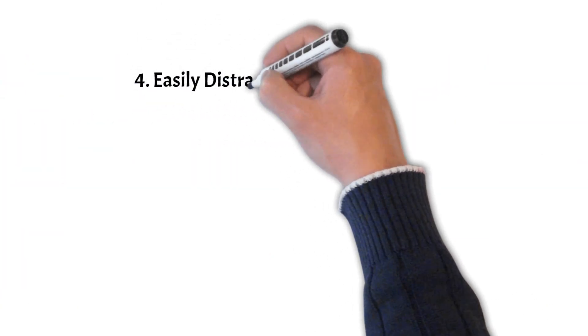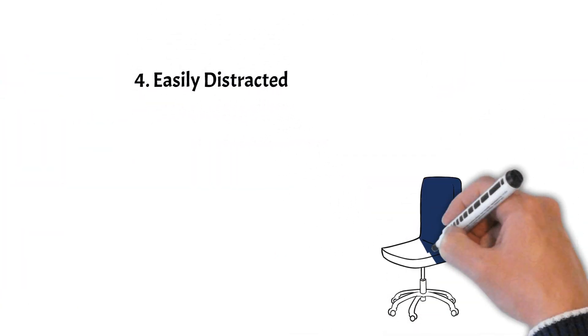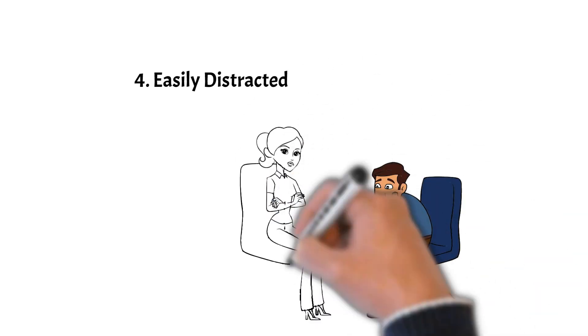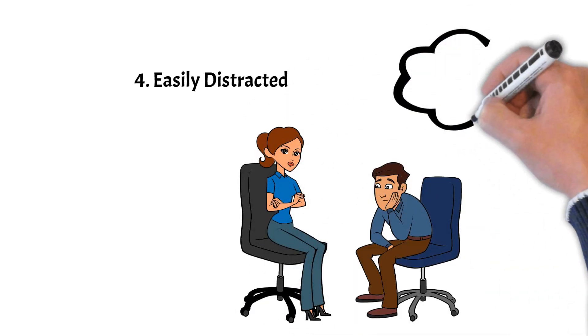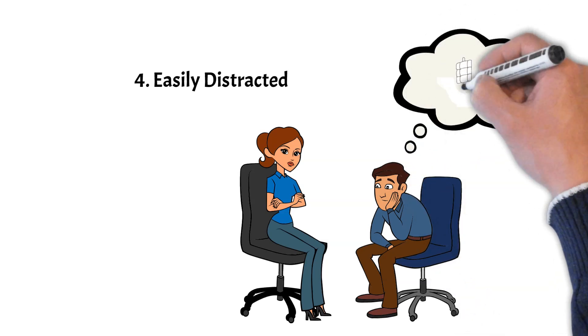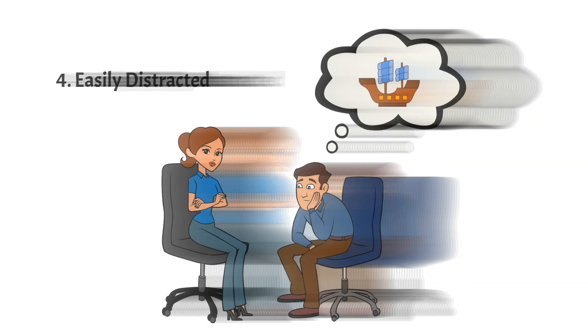4. Easily Distracted. 7s often have a scattered energy, jumping from one idea or activity to the next, making it difficult and challenging for them to focus or sometimes complete tasks.